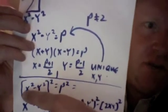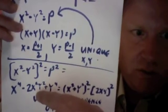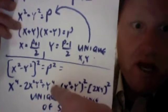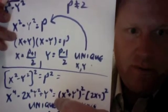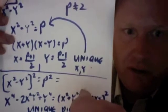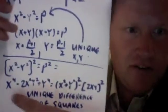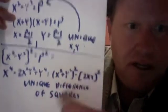we square x squared minus y squared. And we get this: x to the 4th minus 2x squared y squared plus y to the 4th. And we'll confirm that that is the difference of squares. It's the difference of x squared plus y squared squared minus 2xy squared. And sure enough, that's the hypotenuse squared minus the height squared exactly. And since our x and y are unique, these will be a unique difference of squares.